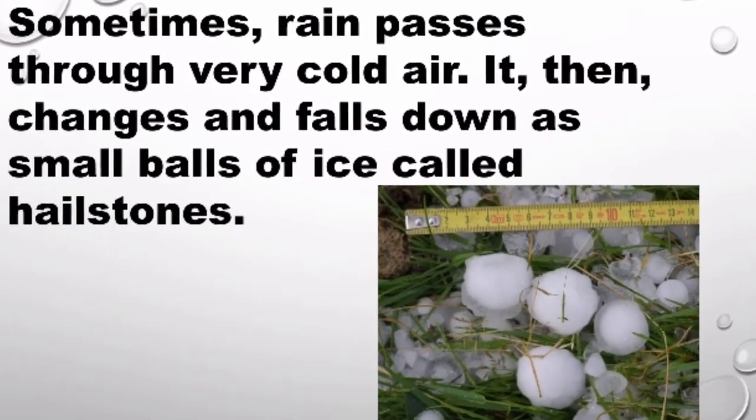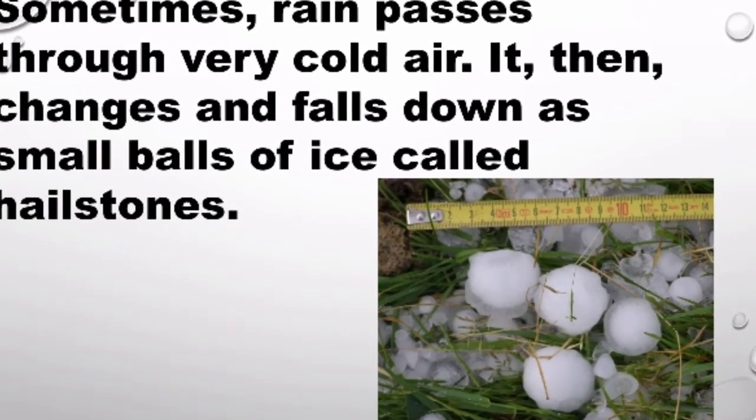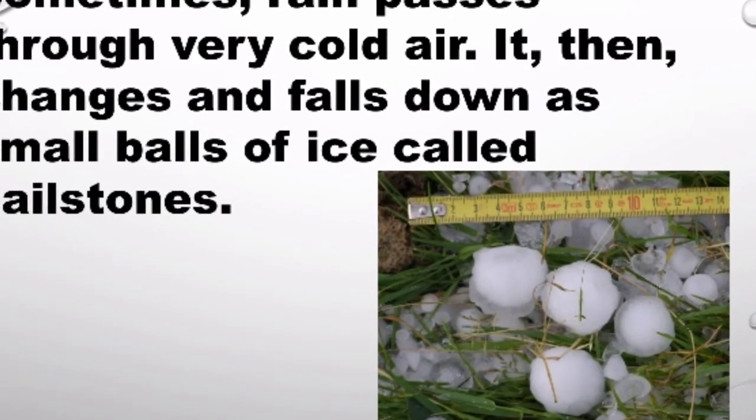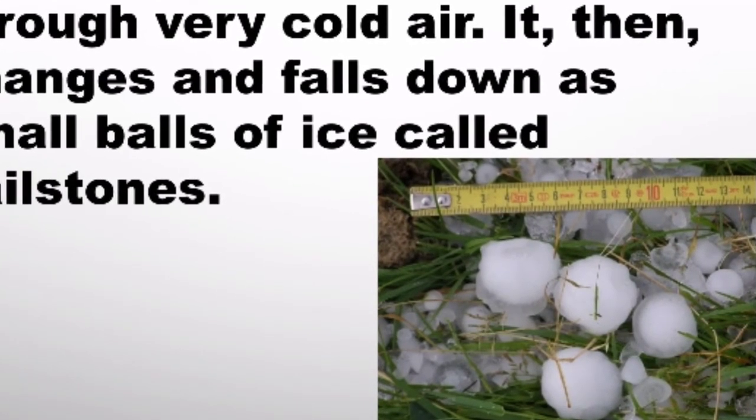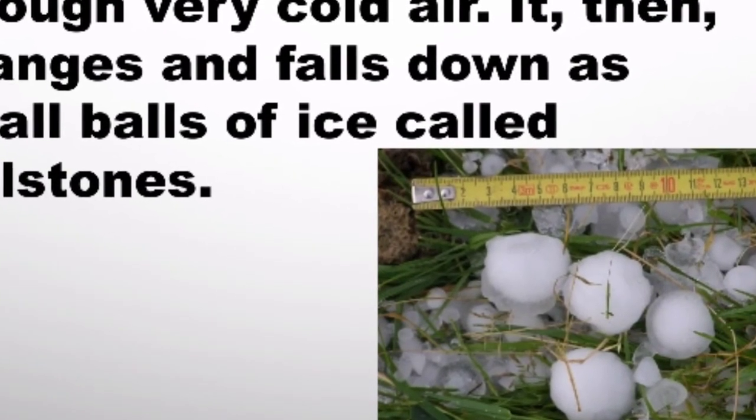Sometimes rain passes through very cold air. It then changes and falls down as small balls called hailstones.